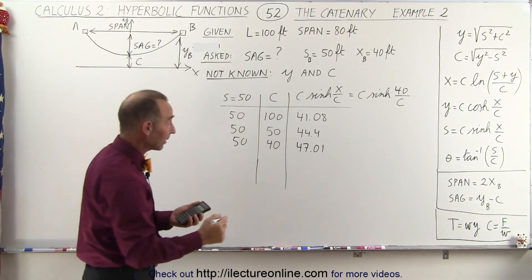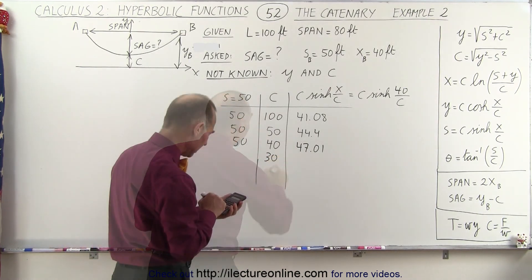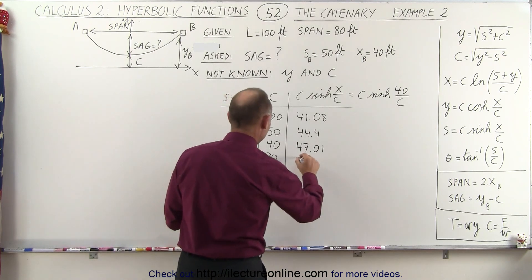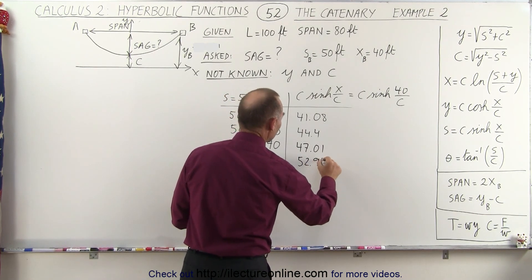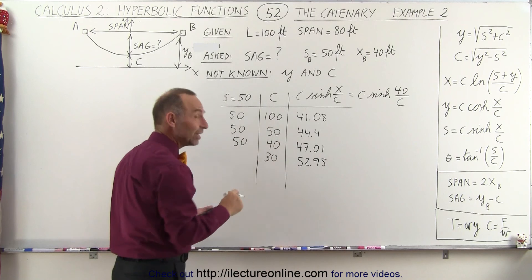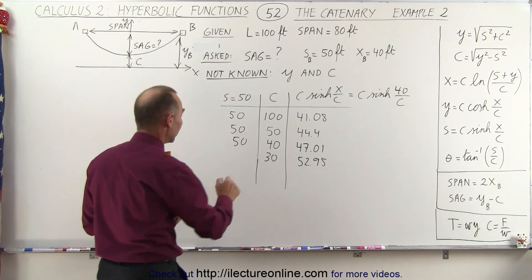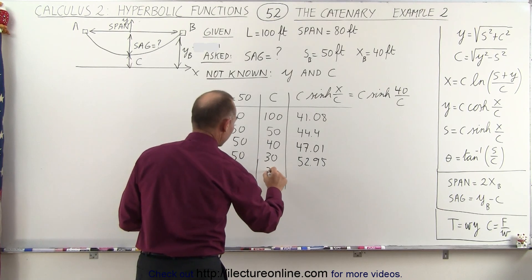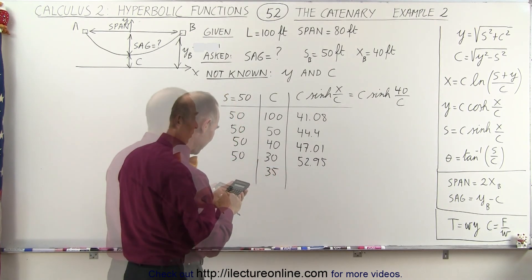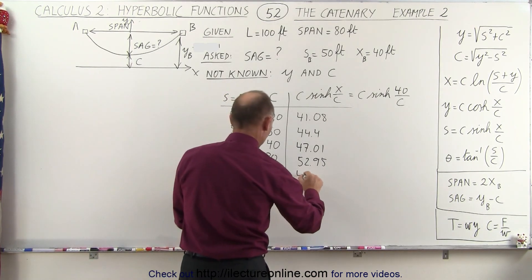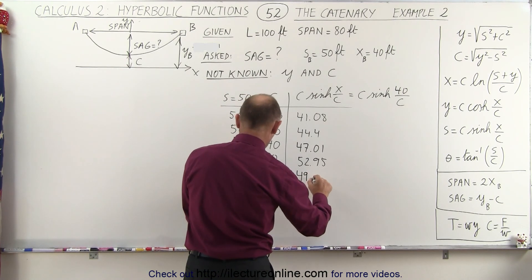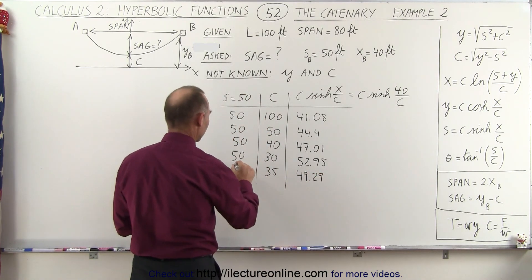So now let's try our next value at 30 and now we get 52.95. So here's an indication that c needs to be somewhere between 40 and 30. So let's try 35 and now we get 49.29. We're getting very close here.